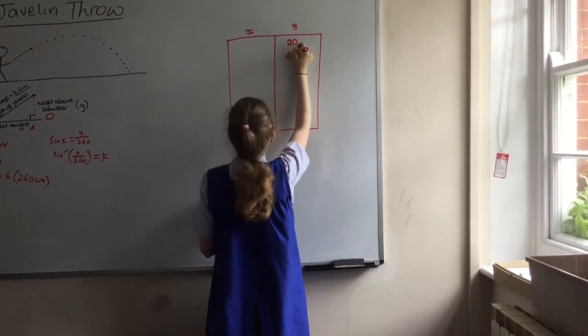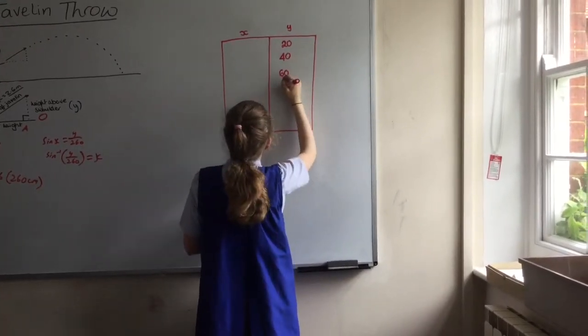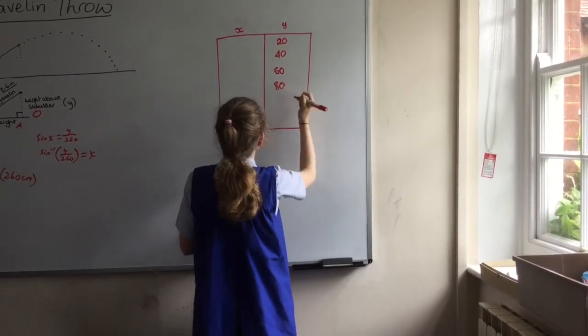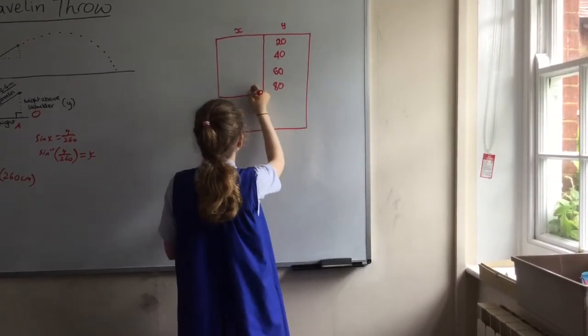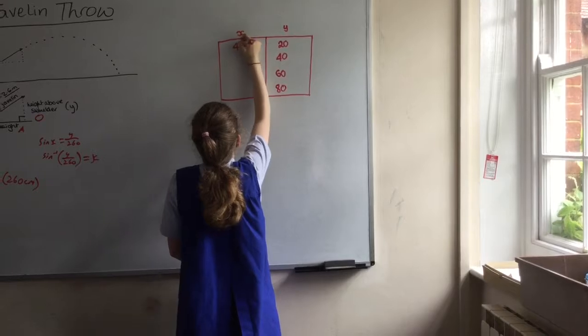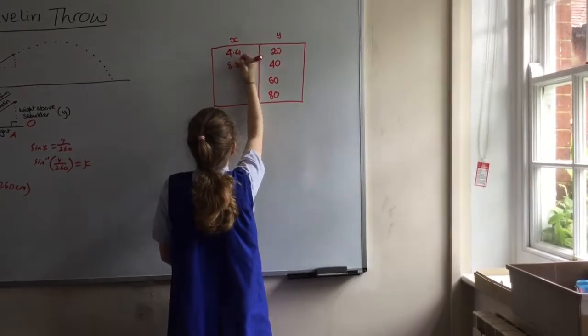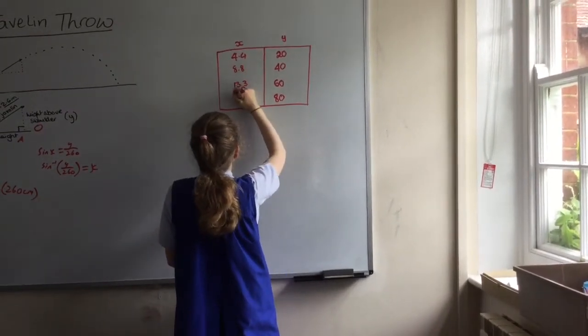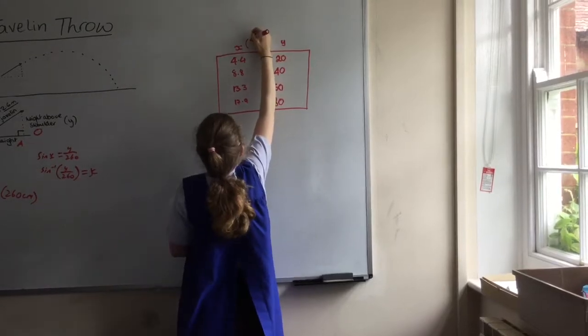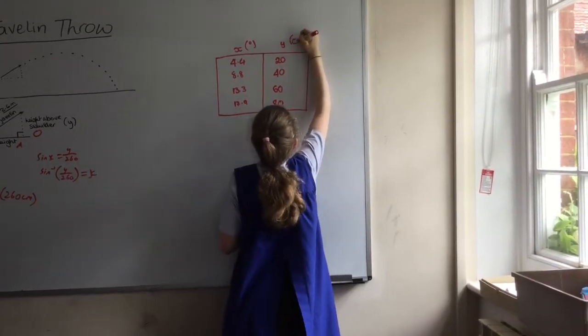Y being our variable, measured in centimetres, we started with values from 20, going up in steps of 20 to 80 centimetres, and found our angles.